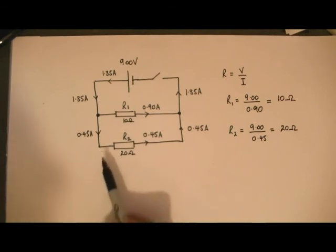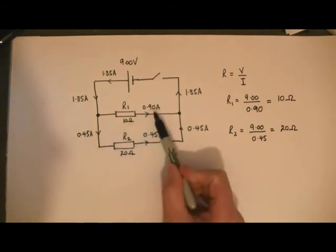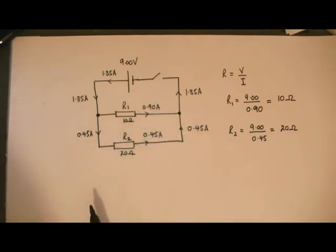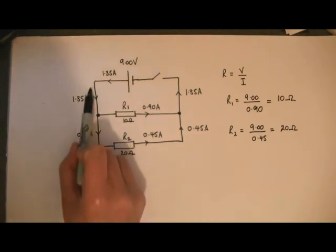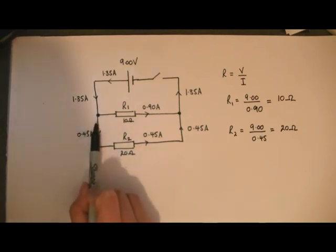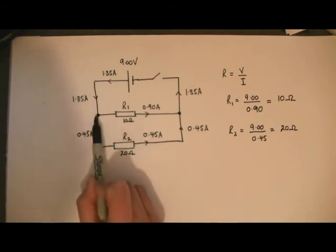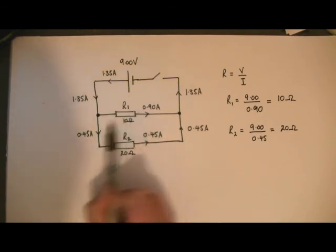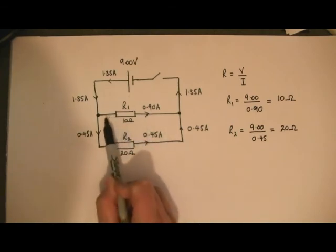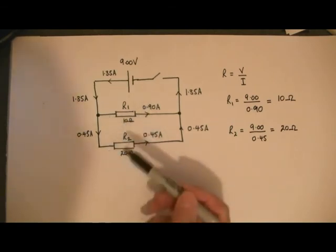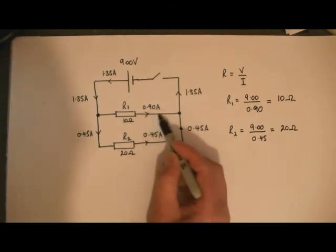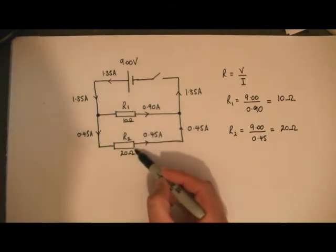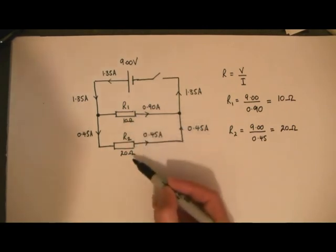So we now need to use that information to explain why these two currents are different. We know from previous work that the bigger the resistance, the smaller the current. When the current flows down here, because this route has more resistance in it than this route, less current flows this way than this way. In fact, this current here is half of this current here because this resistance is double the other resistance.